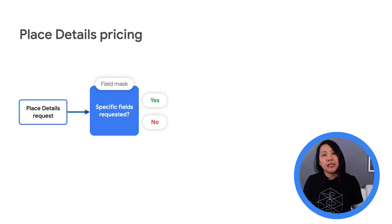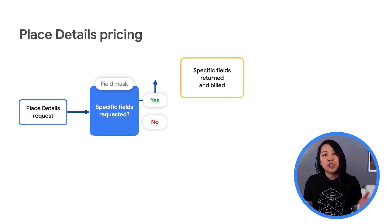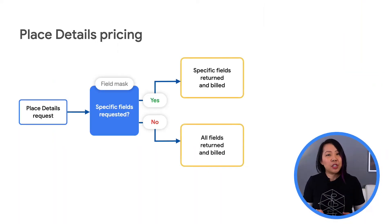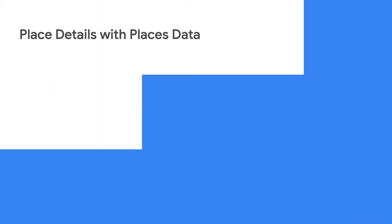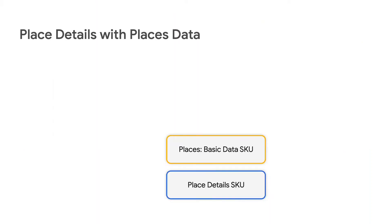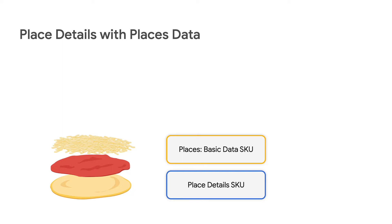Place Details have a range of cost depending on how much detail you get about the place. A Place Details request generates data SKUs — Basic, Contact, and/or Atmosphere — depending on the fields that are specified in the request.